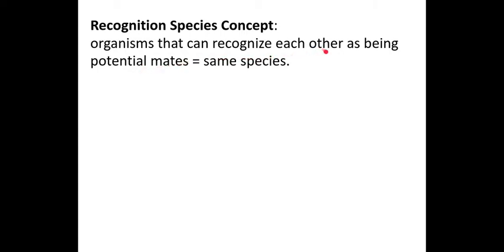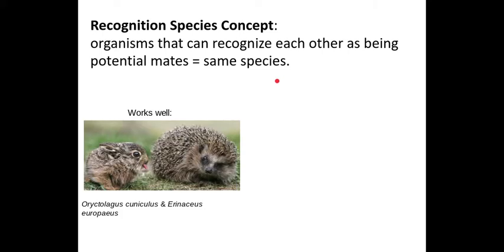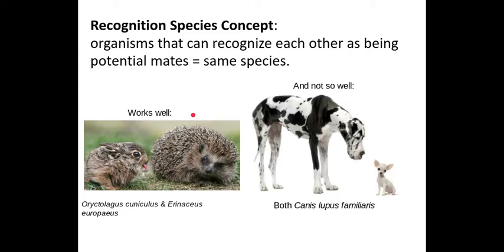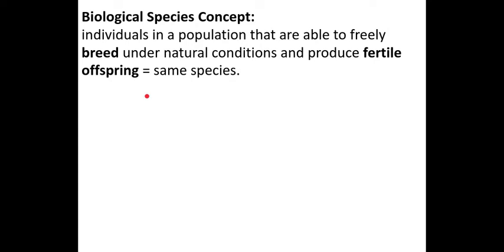Another definition is the recognition species concept, which says organisms that can recognize each other as potential mates are the same species. If they interbreed with each other, we can define them as the same species. A hedgehog and a rabbit may look kind of similar, but they do not interbreed. However, a chihuahua and a Great Dane probably wouldn't be potential mates, yet they are the same species — so this concept works well in some cases but not others.